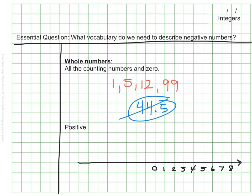The positive whole numbers that we've used in the past are all to the right of zero on a number line. So these are all our positive numbers.